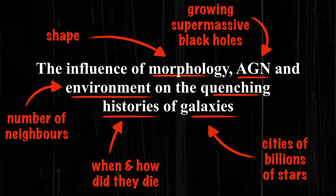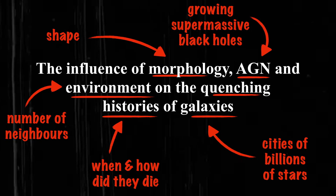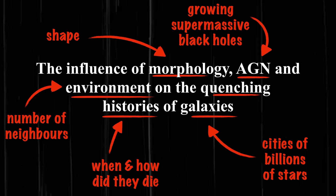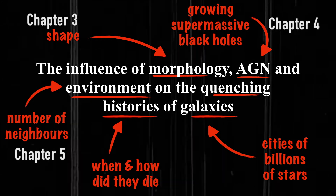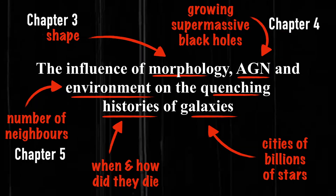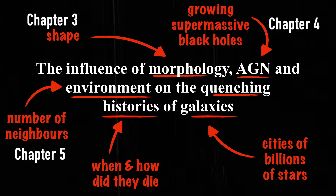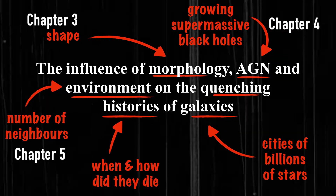Those three things - the shape, the supermassive black hole, and the environment - each make up one of the three core chapters in this thesis.